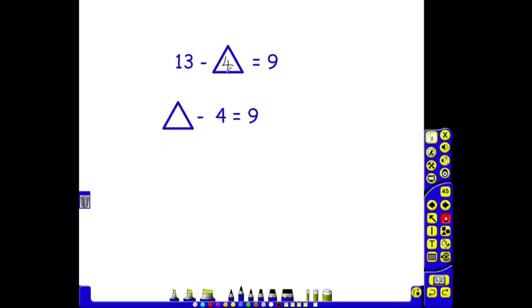In a similar way, they might be given a different number in the number sentence that is missing. And they would use the same strategy of recognising that the triangle is in place of a number. And in this one, they would think about, well, they've taken away something to get to 9. So if they can add that, they've taken away 4, sorry, to get to 9. If they can add that 4 back on to 9, they can find their answer. And here the answer would be 13.